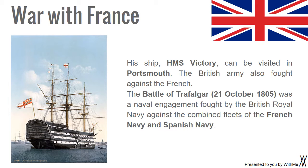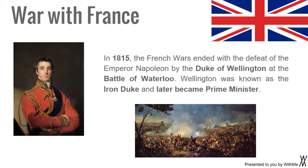The British Army also fought against the French. The Battle of Trafalgar on 21st October 1805 was a naval engagement fought by the British Royal Navy against the combined fleets of the French Navy and Spanish Navy. In 1815, the French Wars ended with the defeat of the Emperor Napoleon by the Duke of Wellington at the Battle of Waterloo. Wellington was known as the Iron Duke and later became Prime Minister.